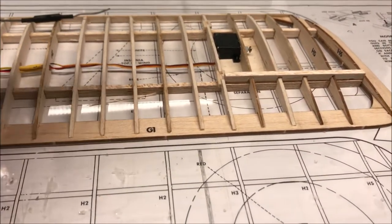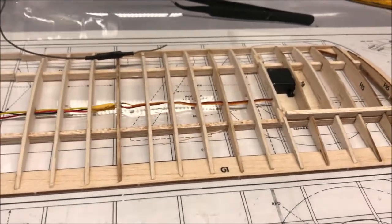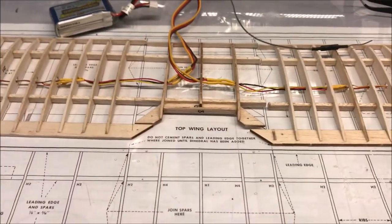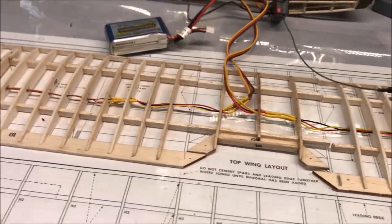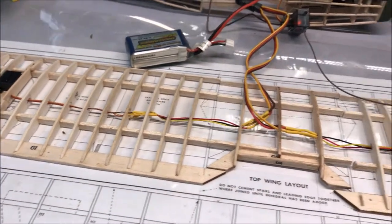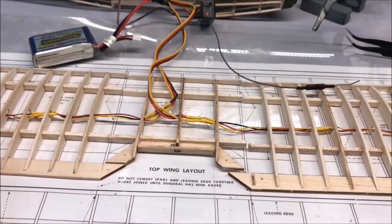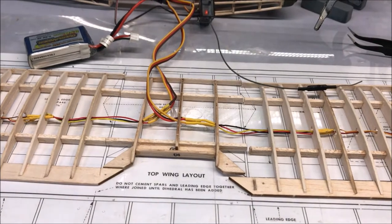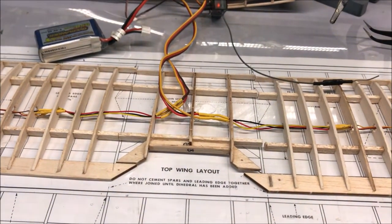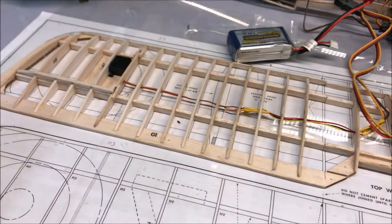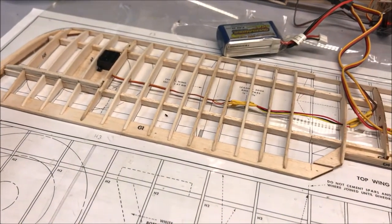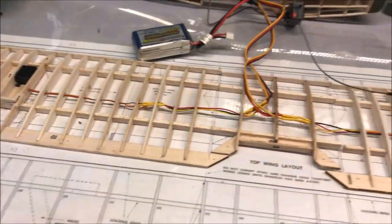Then come over to this end, do the same thing, and then put the push rods in, put the hinges in, prove that they work, which they should do, and then I can glue these ribs in and put the dihedral in. Obviously if I was not putting these ailerons in, this wing would be together, the dihedral would be in, it would have been done yesterday.